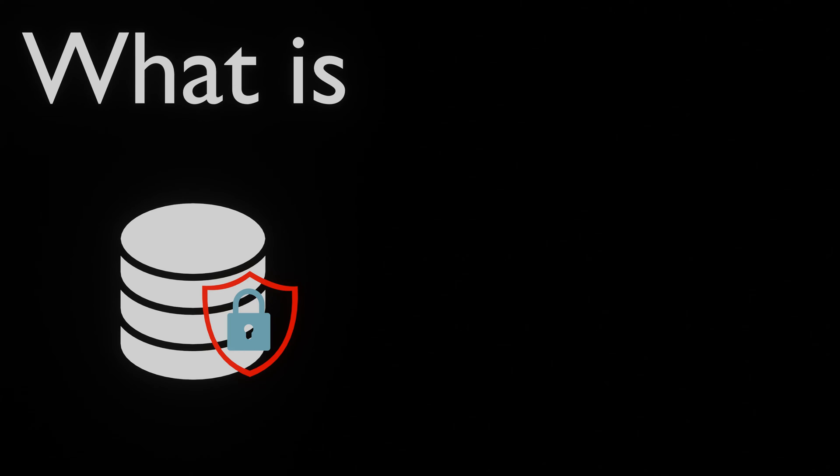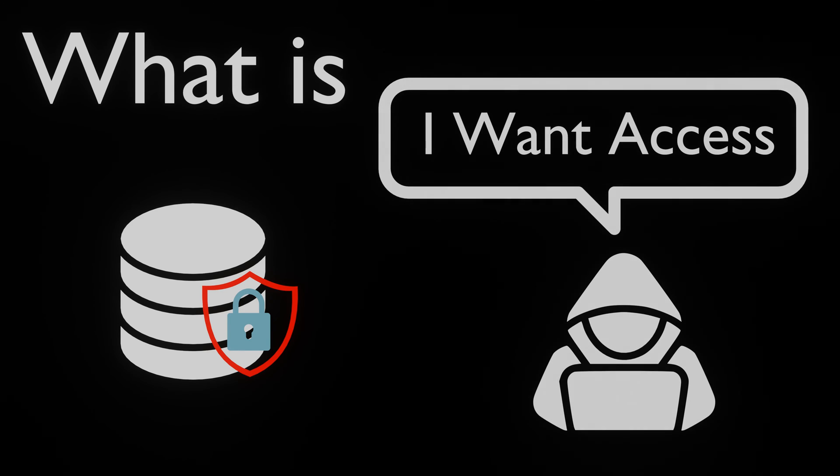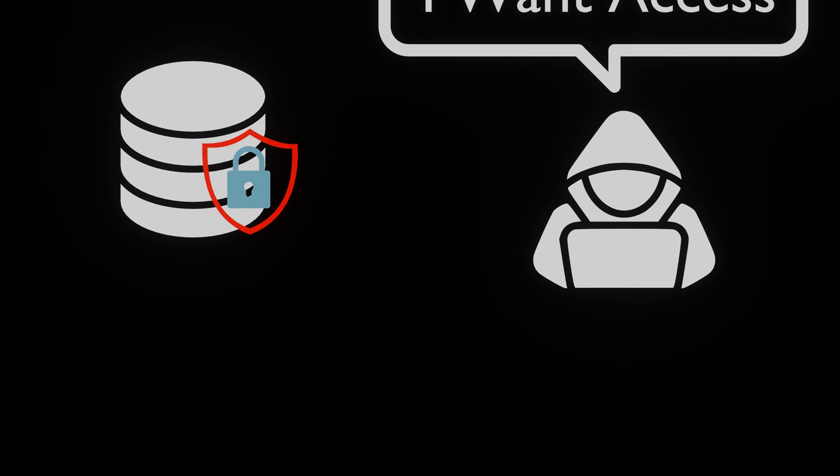The CIA triad is all about protecting information: keeping it safe from unauthorized access, ensuring its accuracy and reliability, and making sure it's available when and where it's needed.